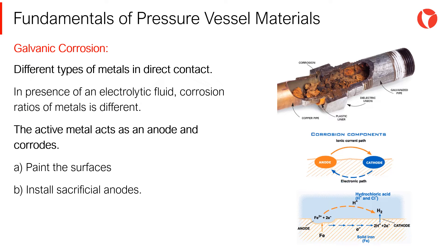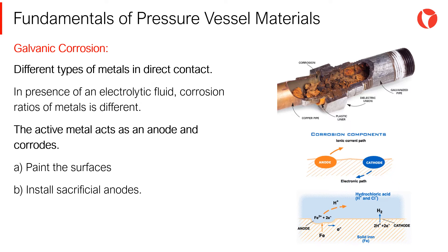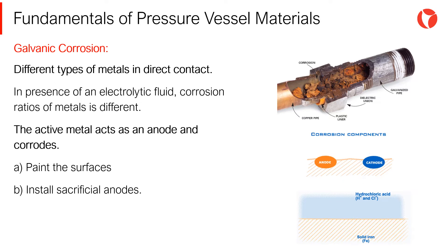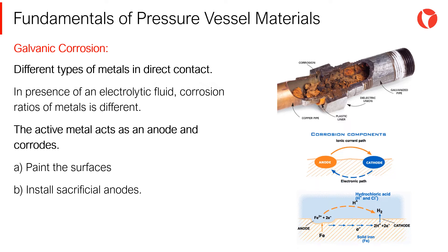The contact of metals with different electrochemical activity produces significant corrosion rates when the fluid is of electrolytic nature. An electric discharge is caused between metals, also known as galvanic corrosion.